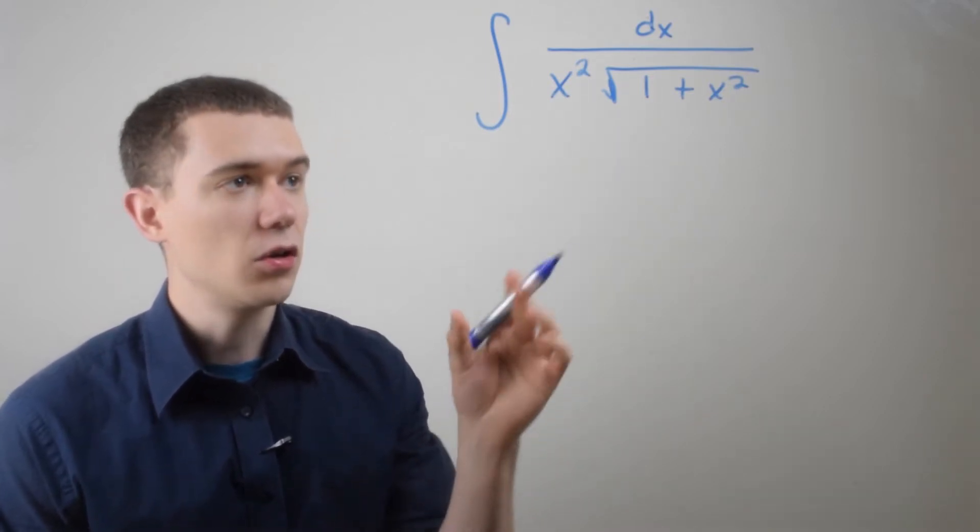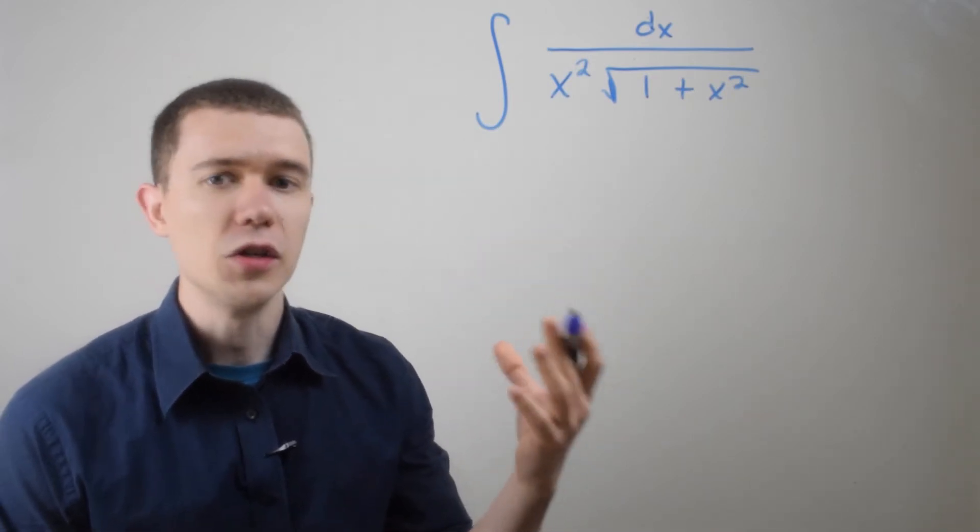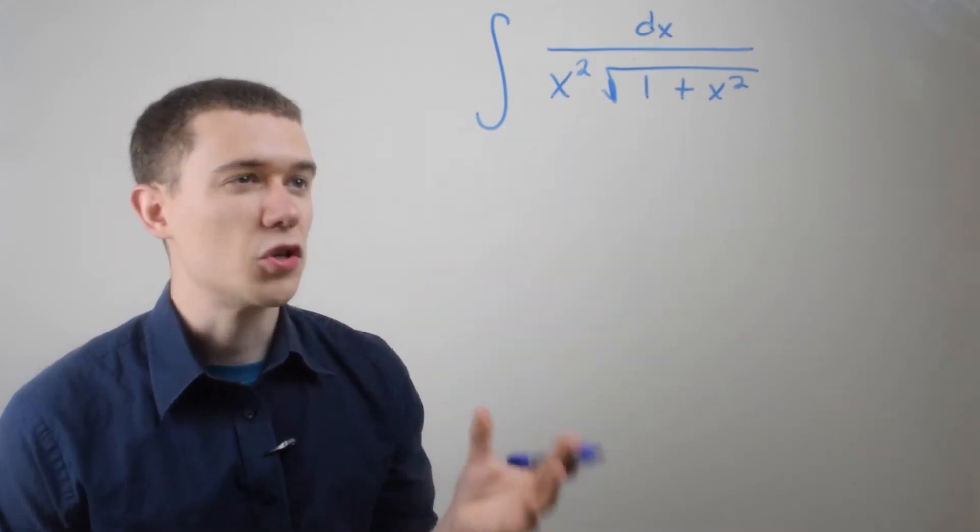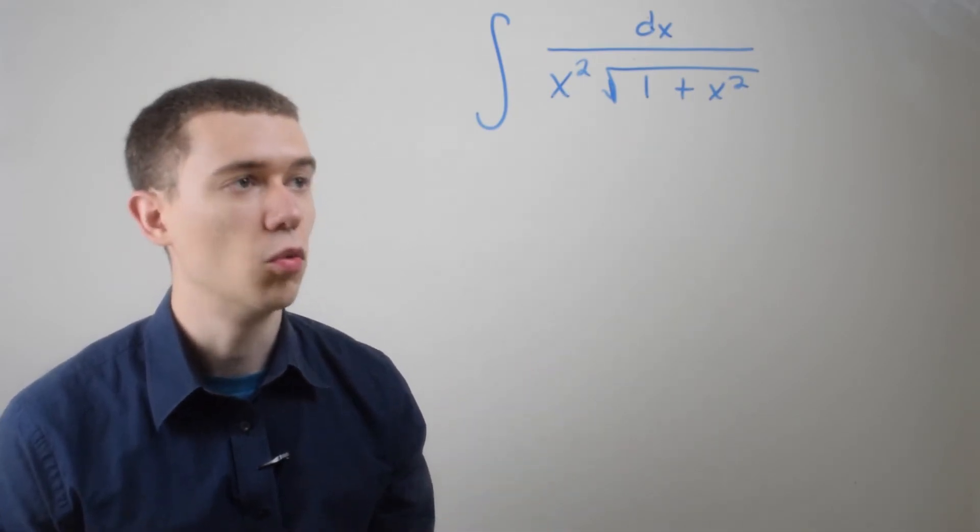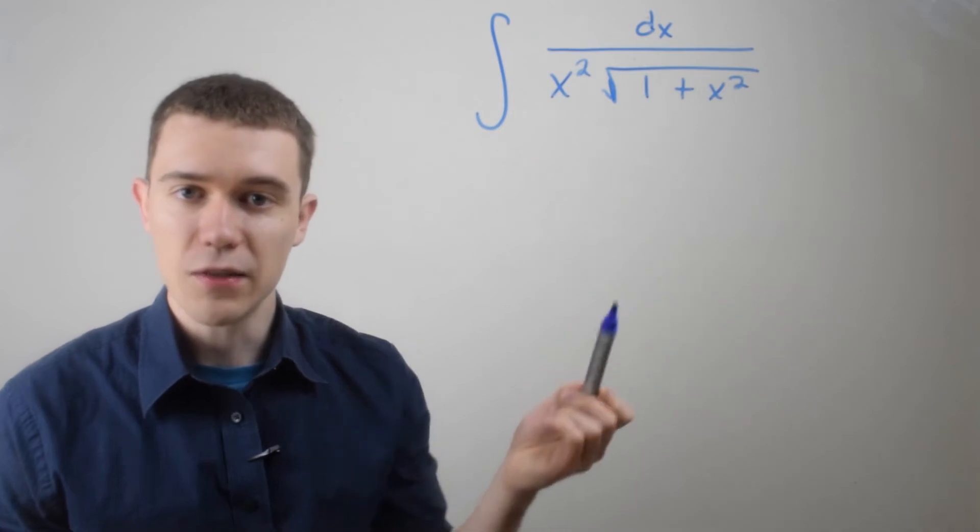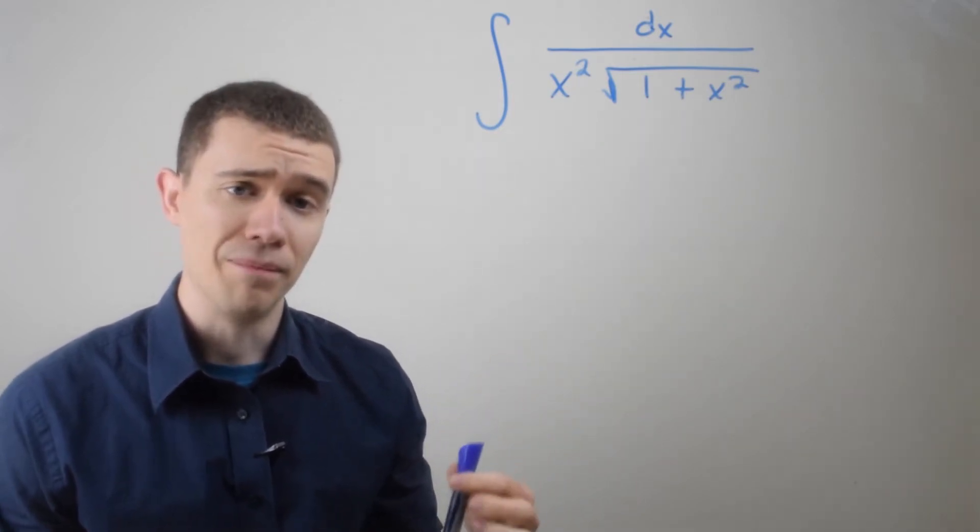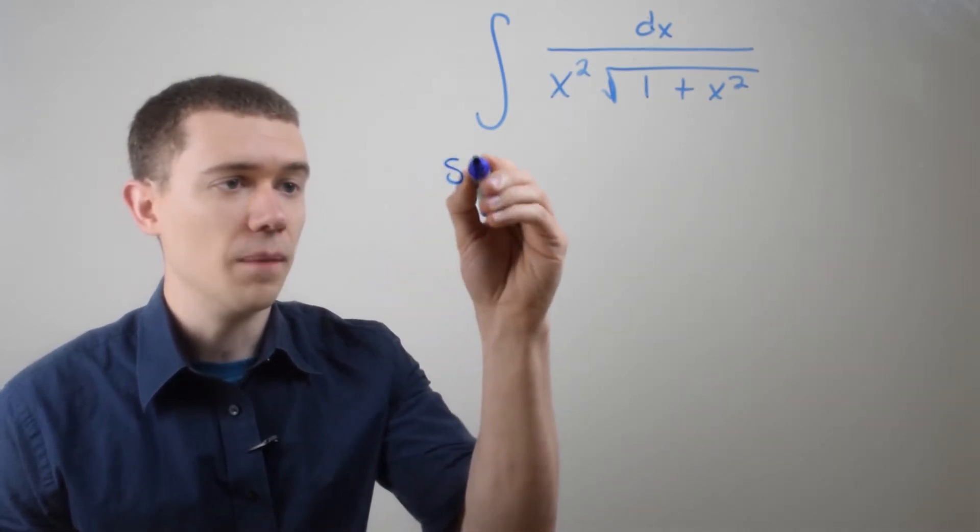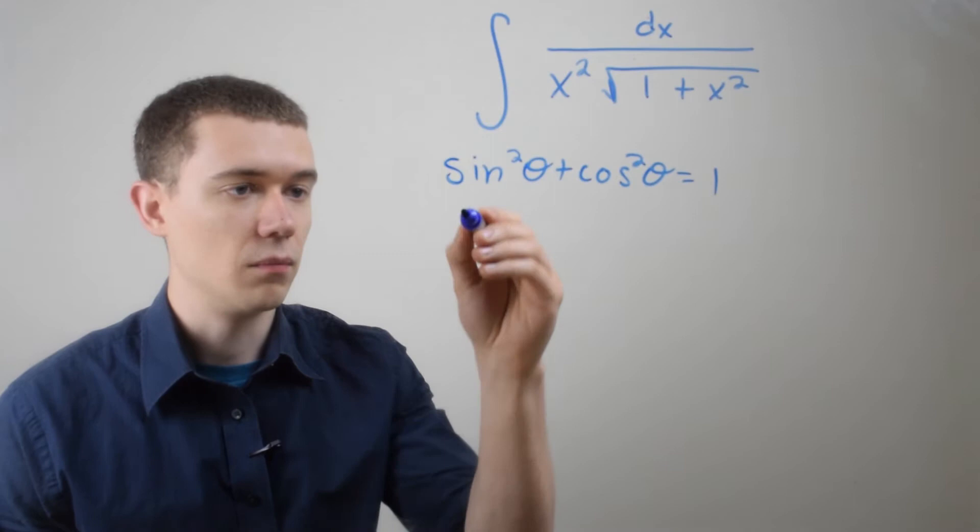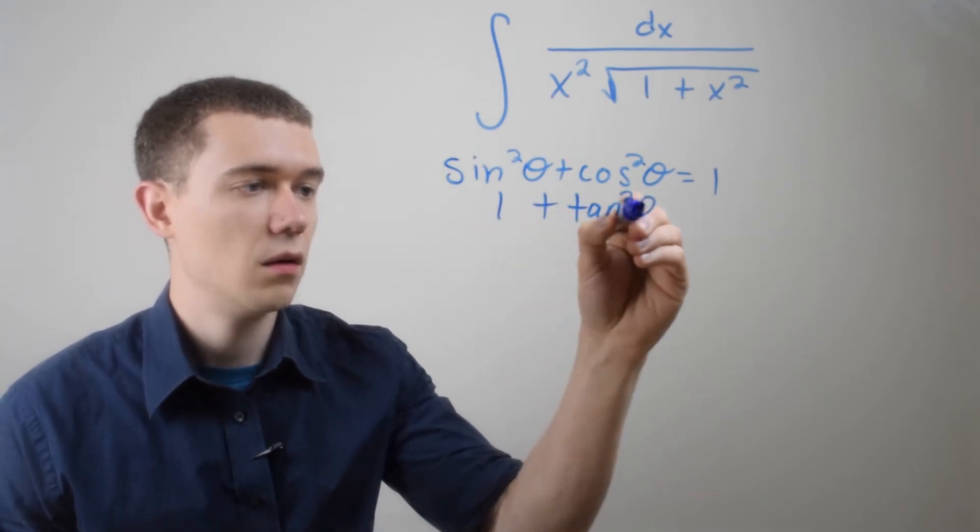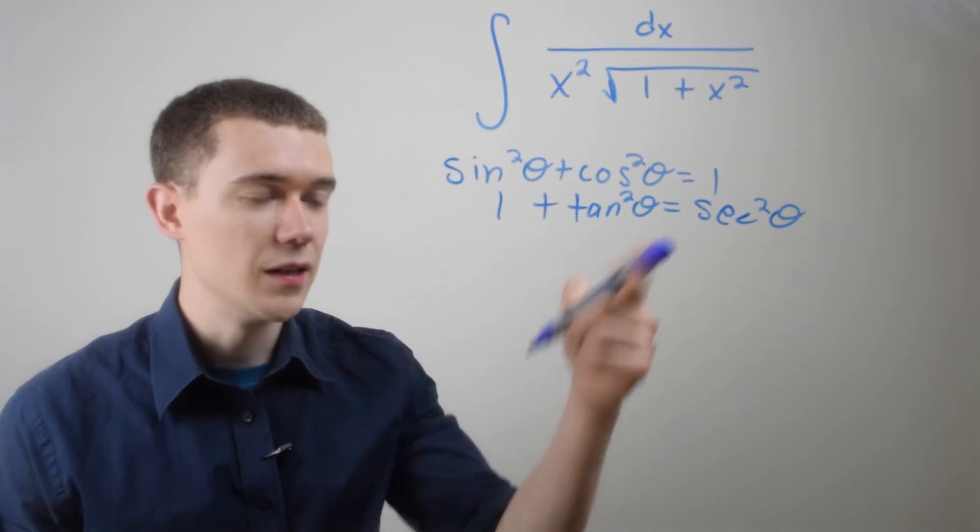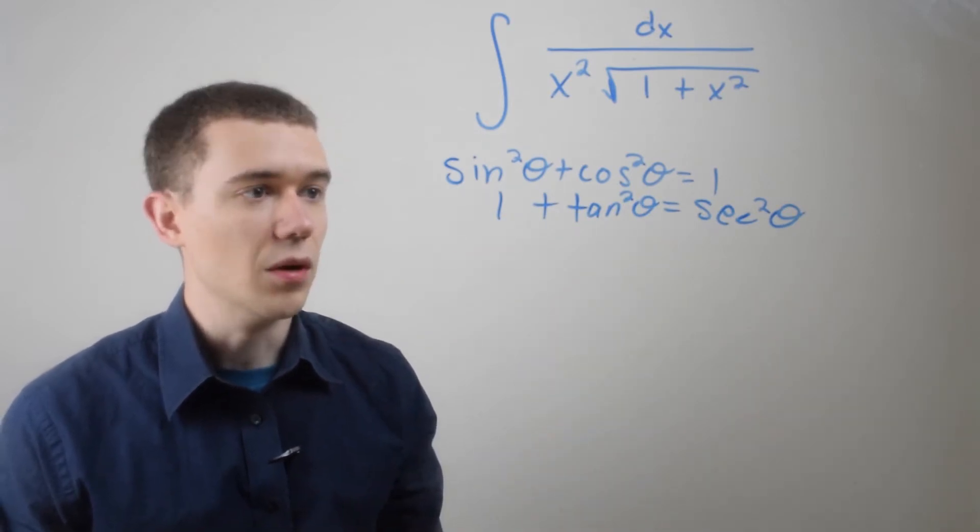And it doesn't look quite like any other integration technique you've learned so far. And it doesn't look like any of those inverse trig integrals exactly, so we're sort of left with trig substitution. So what trig substitution are we going to do? Well, I want to substitute 1 plus x squared, that's for sure, but I have to do it in a very specific way. And the two trig identities that you're going to be using are sine squared plus cosine squared equals 1, fundamental trig identity, and then 1 plus tan squared theta equals secant squared theta. Pretty much the same identity if you divide the first equation by, well, cosine squared.